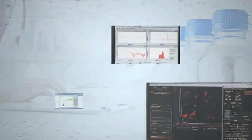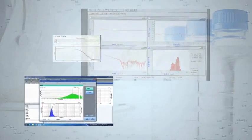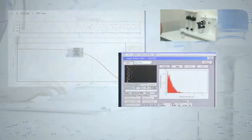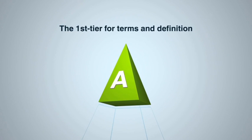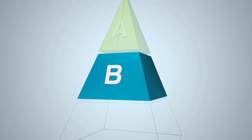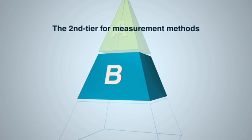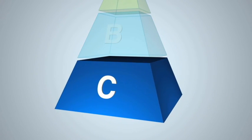Although significant progress has been made developing ultrafine bubble measurement and generation technologies, and their use in various applications has already begun, the terminology and definitions of fine bubbles and ultrafine bubbles have not yet been clearly established. From this viewpoint, a three-layer system of standards is being considered: definition and terminology standards as the first-tier standards A, measurement methods as the second-tier group of standards B, and specific industrial applications as the third-tier group of standards C.